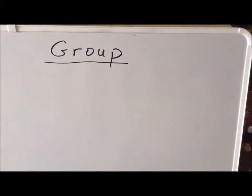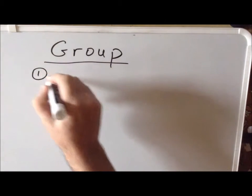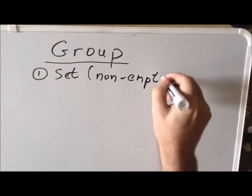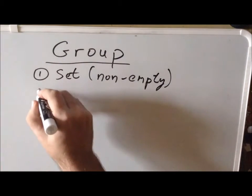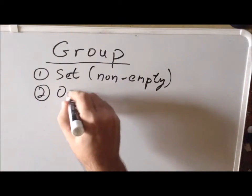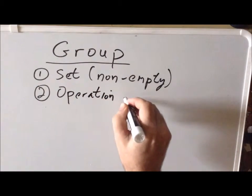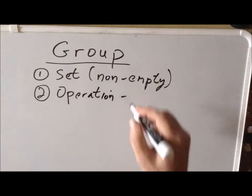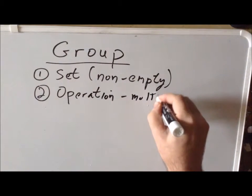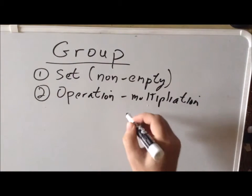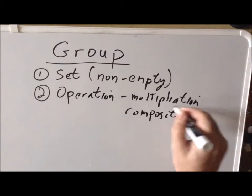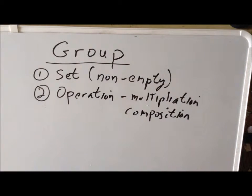To have a group, I need two things. One is a non-empty set, and the second is a mathematical operation. In general, if we're not going to specify it specifically, we either call it multiplication, or more generically, composition. We're going to write the operation so that it looks like a multiplication, even if it isn't.